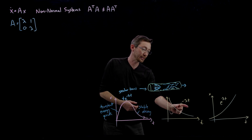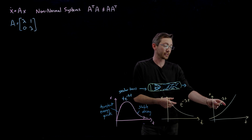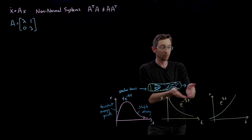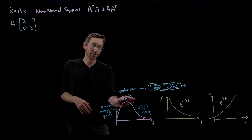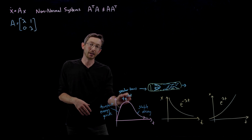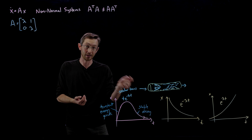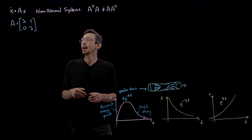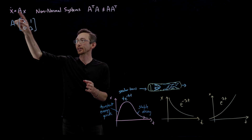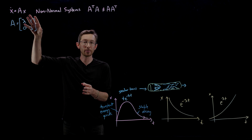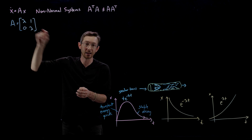Just as stable or unstable dynamics are governed by e^(λt), here the dynamics are going to be dominated by a term that looks like t times e^(λt). That comes up when you have a matrix of this form with a repeated eigenvalue.